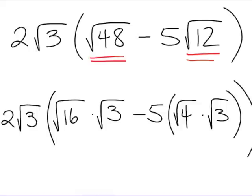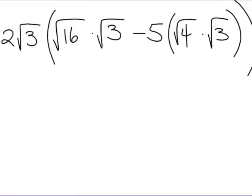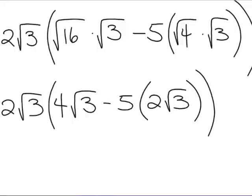Now, let's just make this a little bit simplified. We will rewrite the whole thing. Here we have 2 root 3. The square root of 16 is 4, and we have root 3 minus 5 times quantity, the square root of 4 is 2 times the square root of 3. Alright, things are looking a little bit better now.